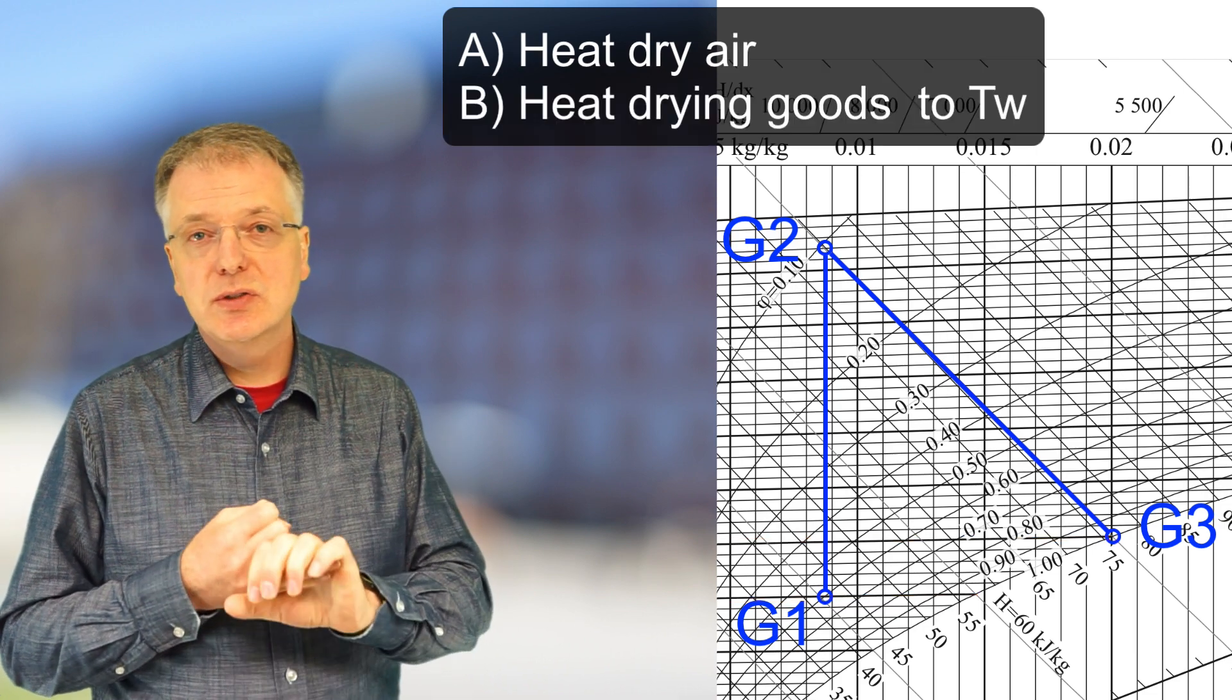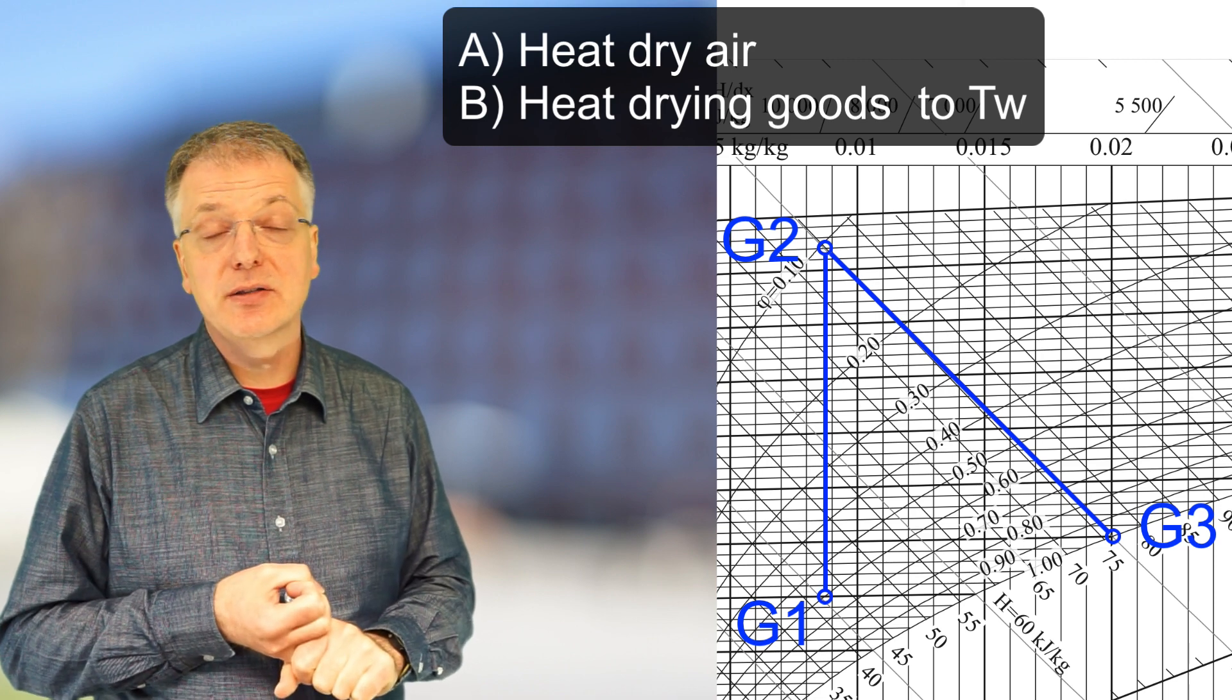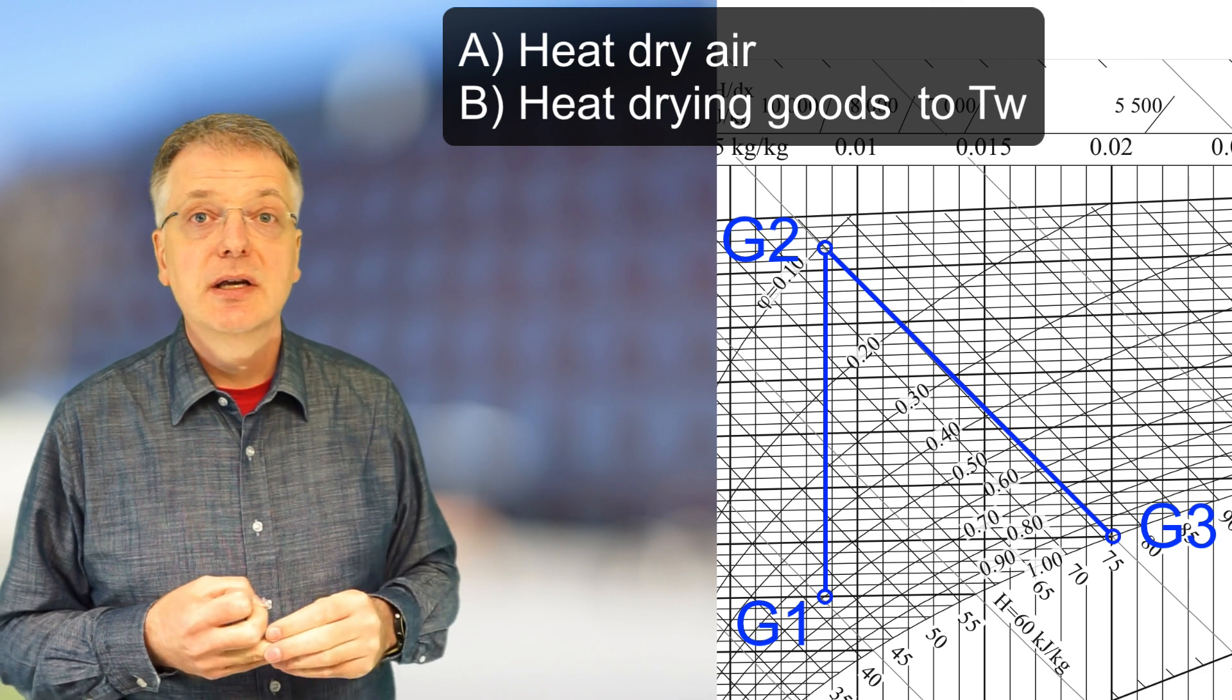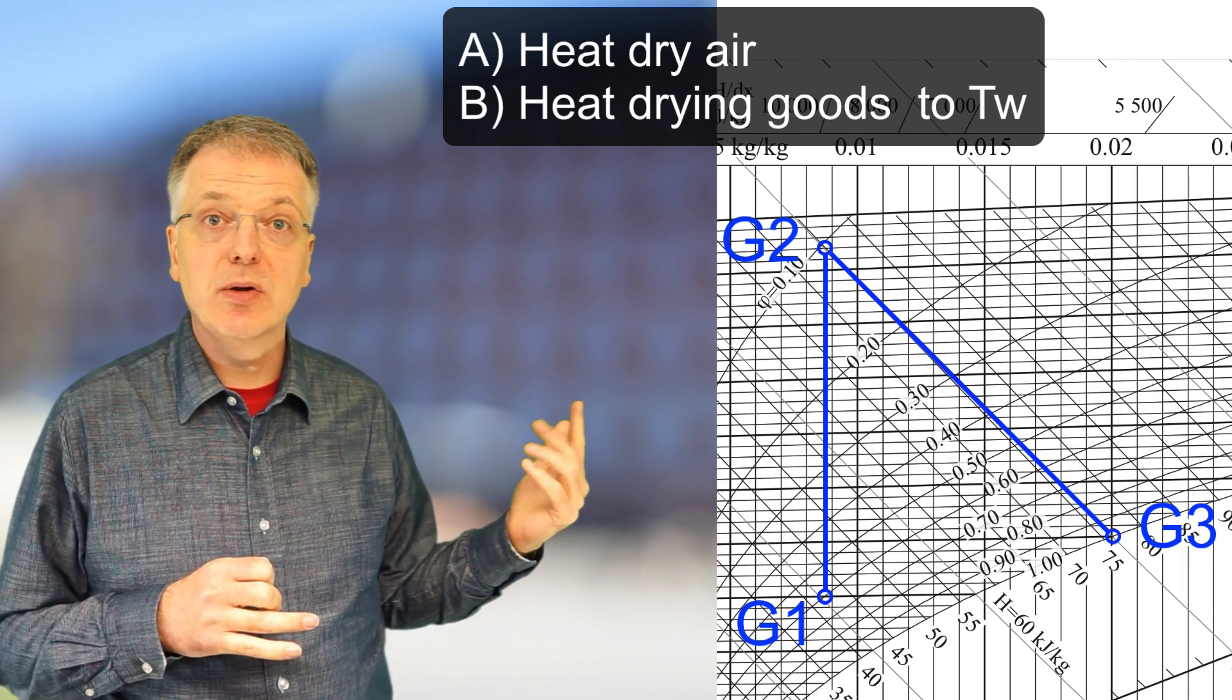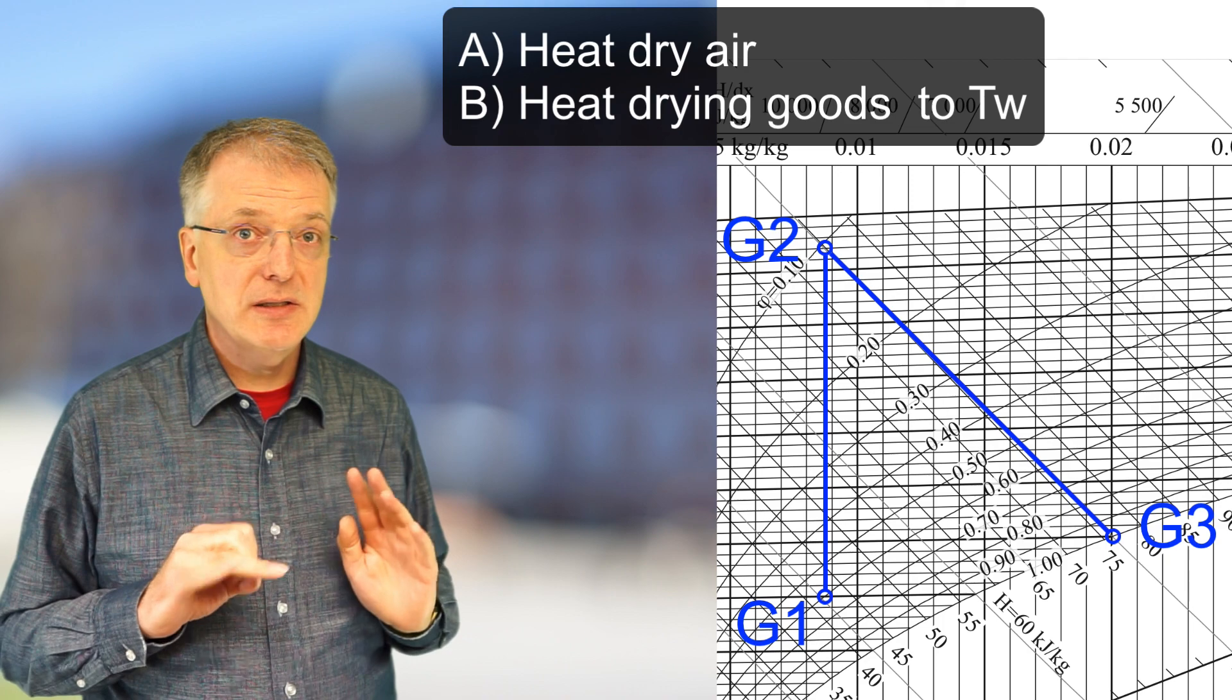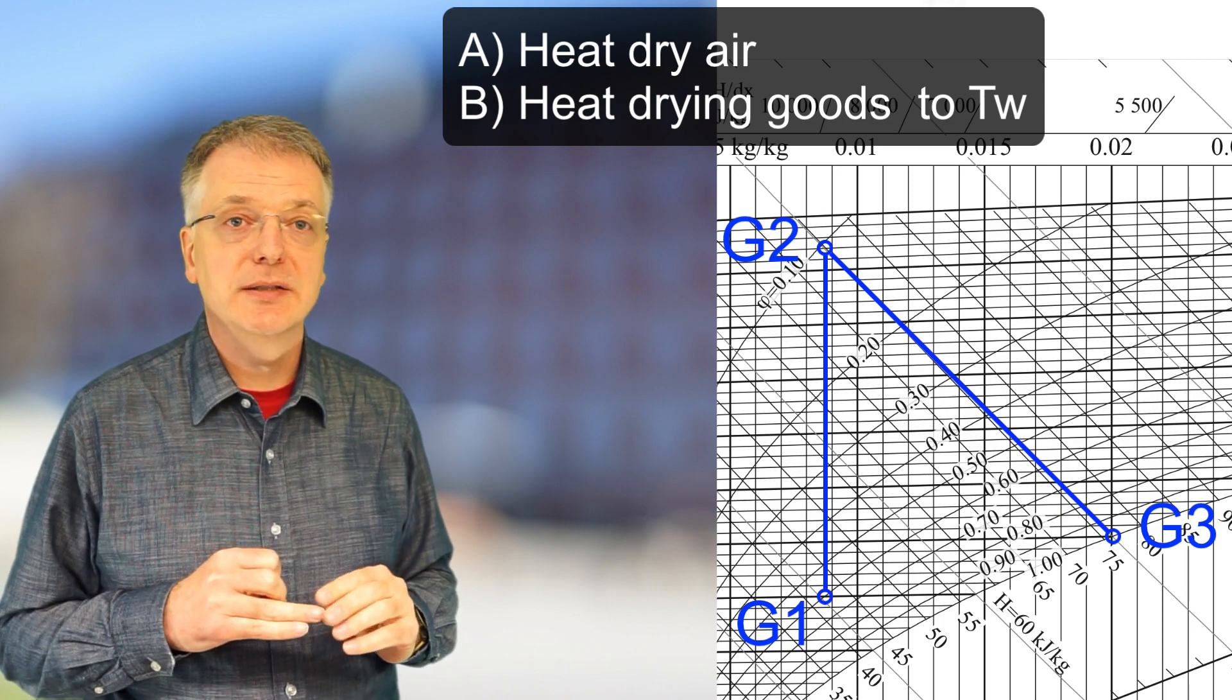B, you need energy to heat the drying goods to the wet temperature of the air that enters the adiabatic dryer. If you don't do that before letting the goods into the dryer, the air in the adiabatic dryer will not follow the adiabatic cooling line. In our example, the drying goods had already been heated up to the wet temperature, so this does not contribute to the difference in our case.